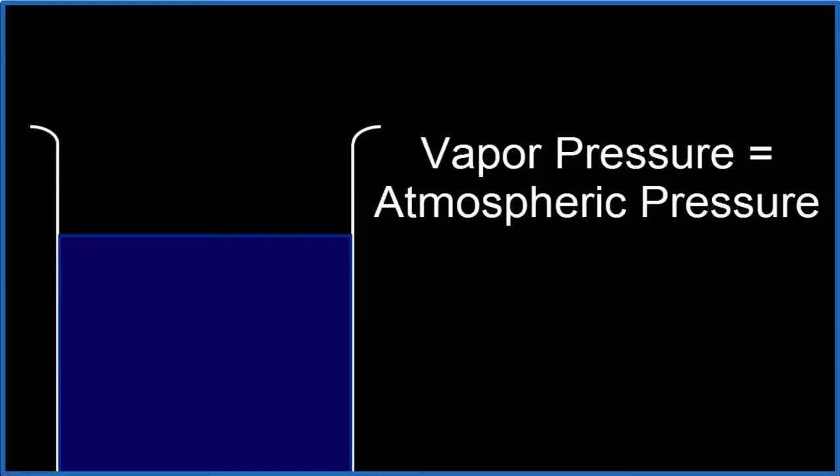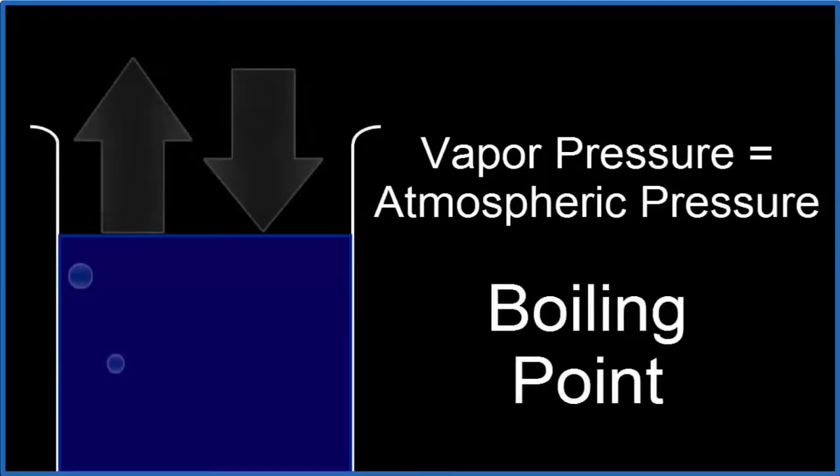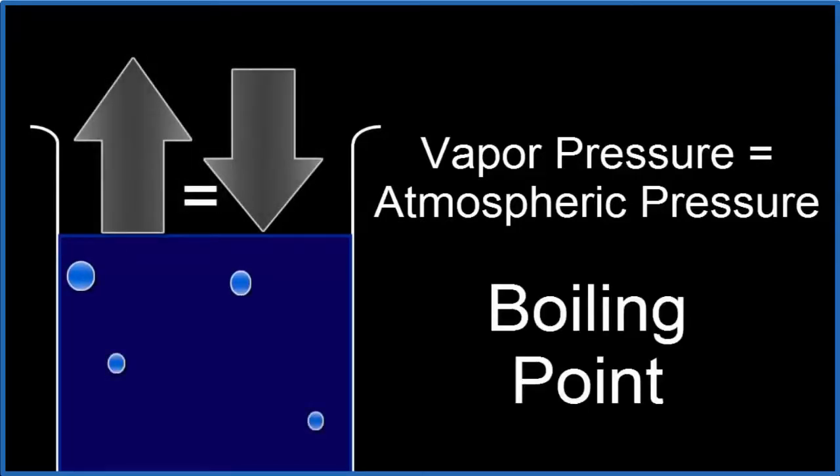We can make boiling happen by either increasing the vapor pressure or decreasing the atmospheric pressure. Either way, once the vapor pressure and the atmospheric pressure are equal, we've reached the boiling point, and boiling can begin.